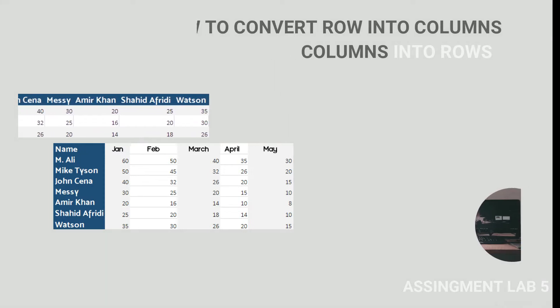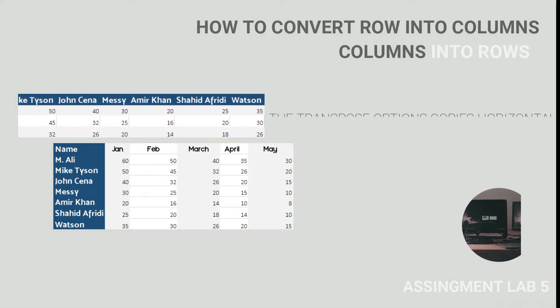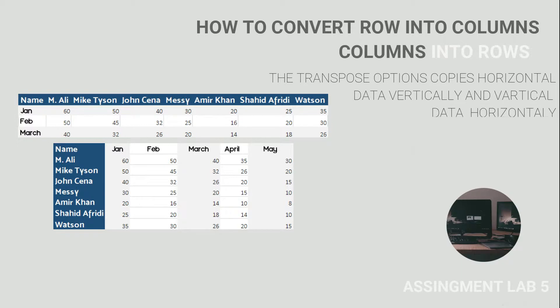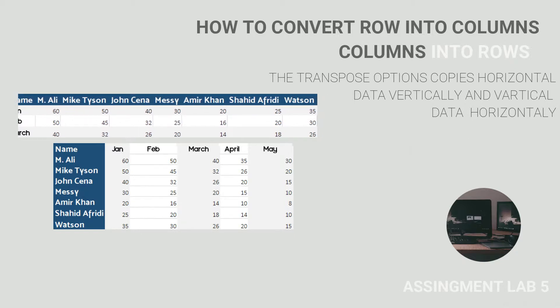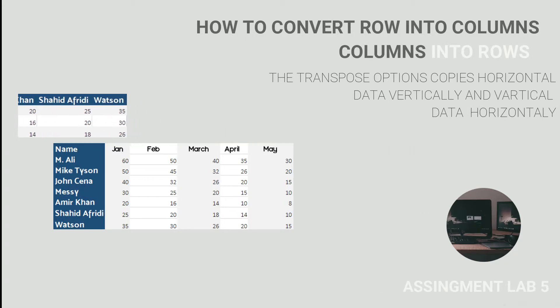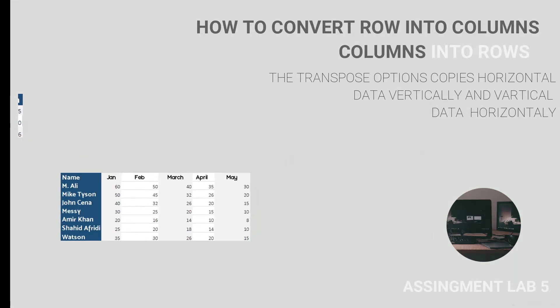Now we talk about how to transfer the columns data into rows and rows data into columns through the transpose option. Do not need to waste your time doing this manually. The transpose option is used to copy data located in rows into columns and copy data located in columns into rows. This means that the vertical data is converted into horizontal and horizontal data into vertical.